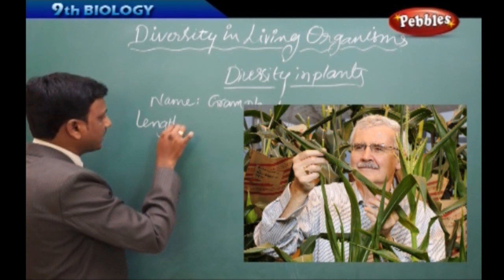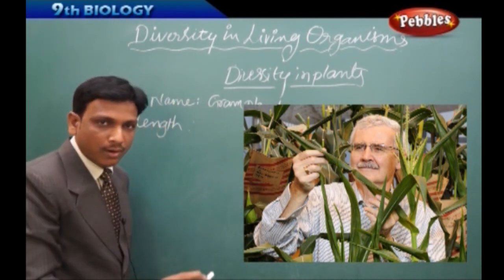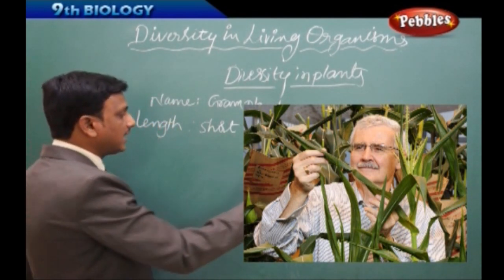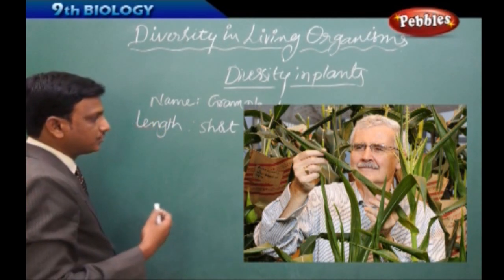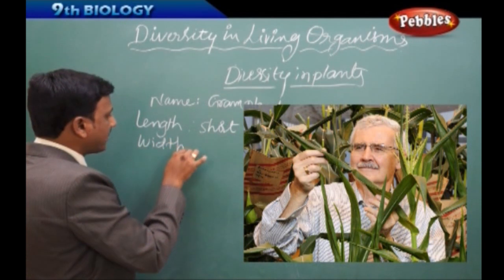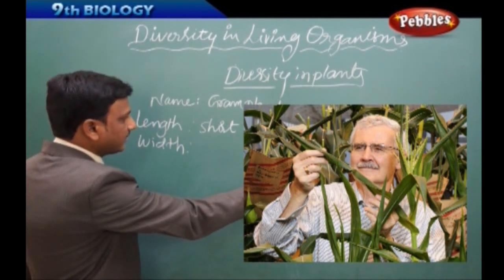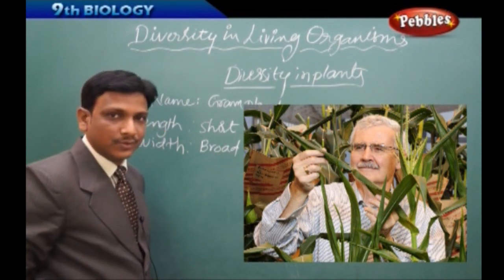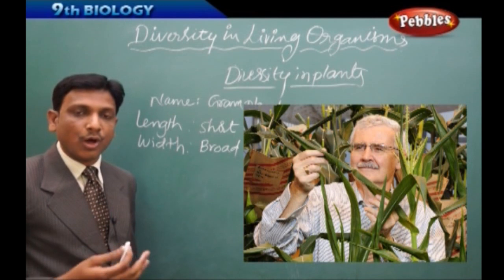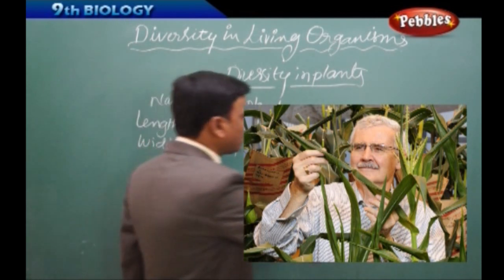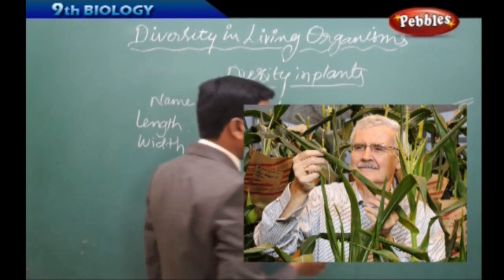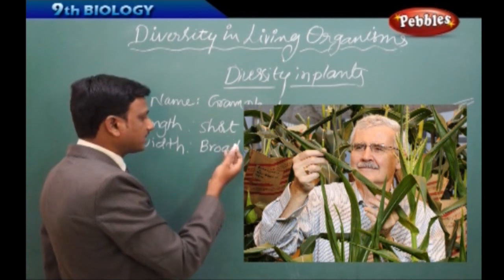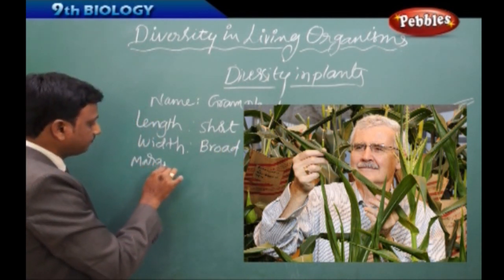The leaf is short — not a very long leaf. We can write the length in centimeters, say two or three centimeters. For width, it is short and broad — not narrow. Some plants have long and narrow leaves, like the coconut leaf, and even paddy and grass have long and narrow leaves. But this gram plant has short and broad leaves. Now, how is the margin of the leaf?